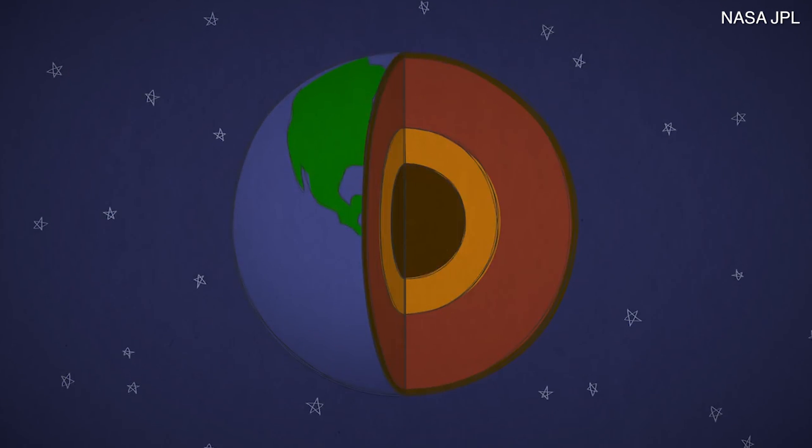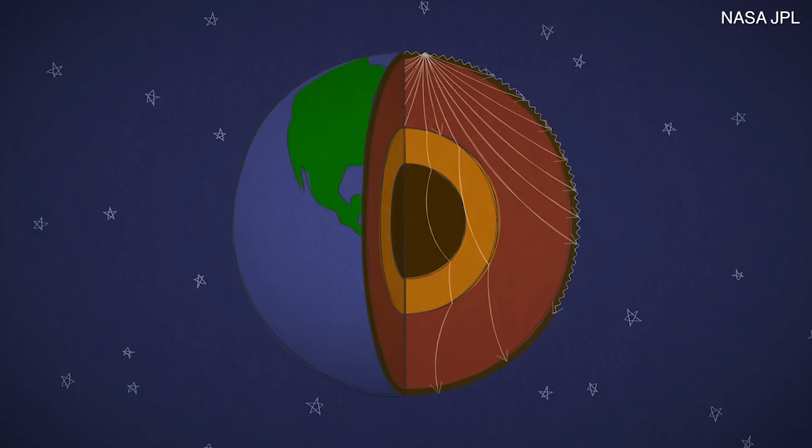Quakes of any kind send seismic waves around and through the planet. Scientists can study how those waves bounce off layers deep underground to help understand what a planet's interior is like.